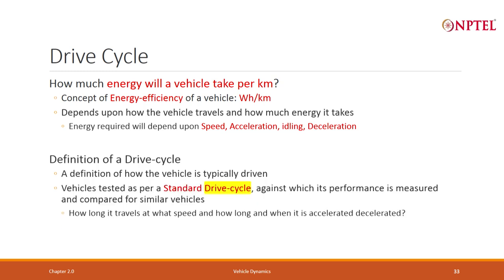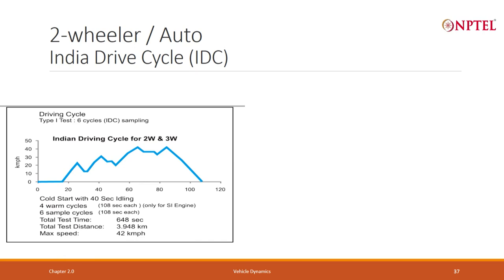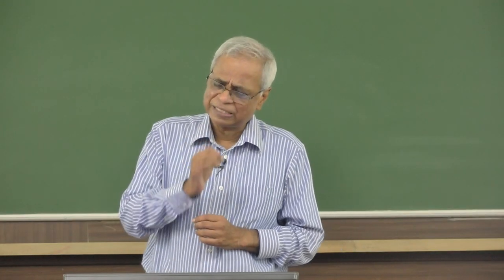We introduced the concept of the drive cycle, and said that based on that drive cycle we can compute what is the maximum power required, the maximum torque, the maximum energy, and the energy efficiency in watt-hours per kilometer. We defined the first standard drive cycle — the two-wheeler drive cycle called the India Drive Cycle. Different cities may have different drive cycles because roads, slopes, and traffic speeds differ, but the India Drive Cycle is widely used to compare two-wheelers around the country.